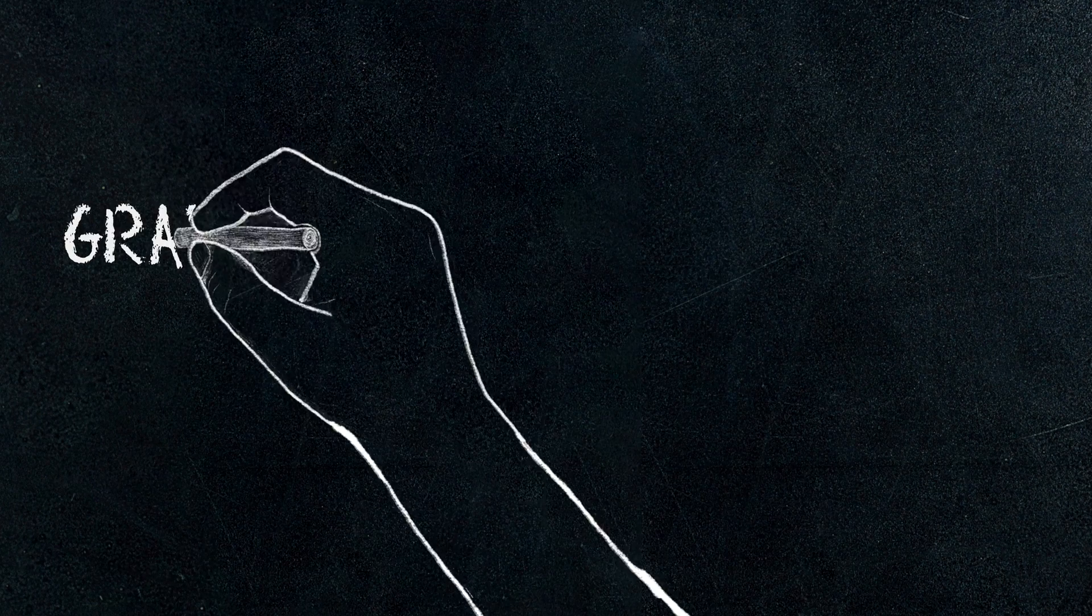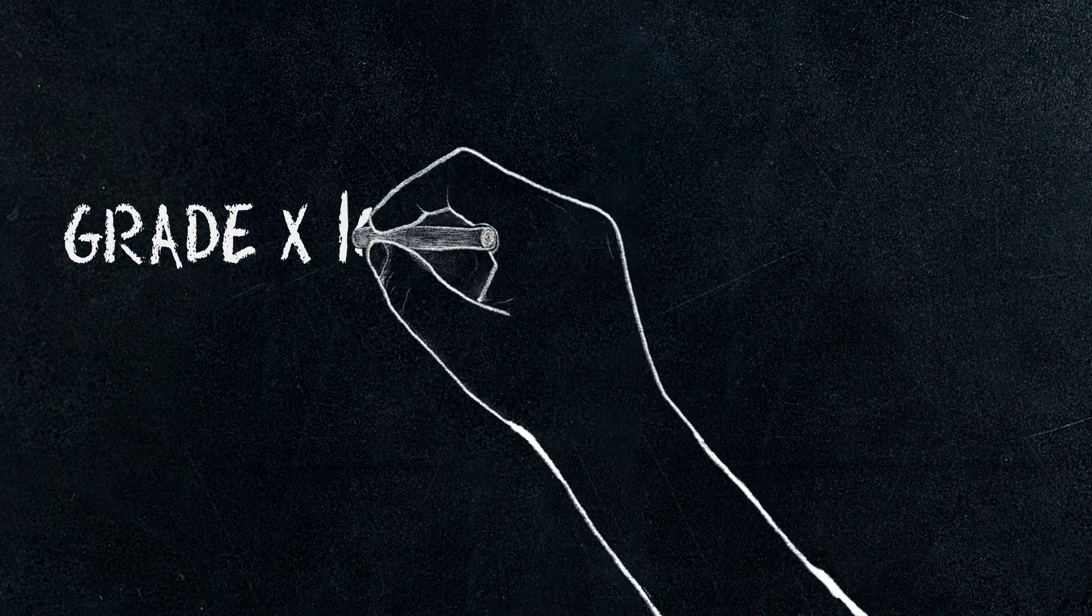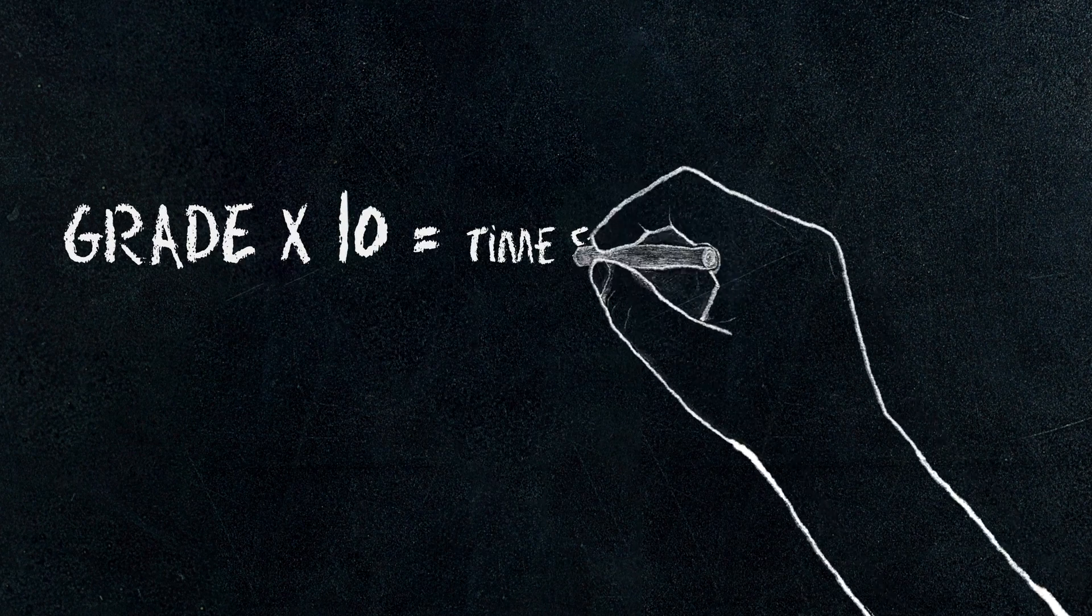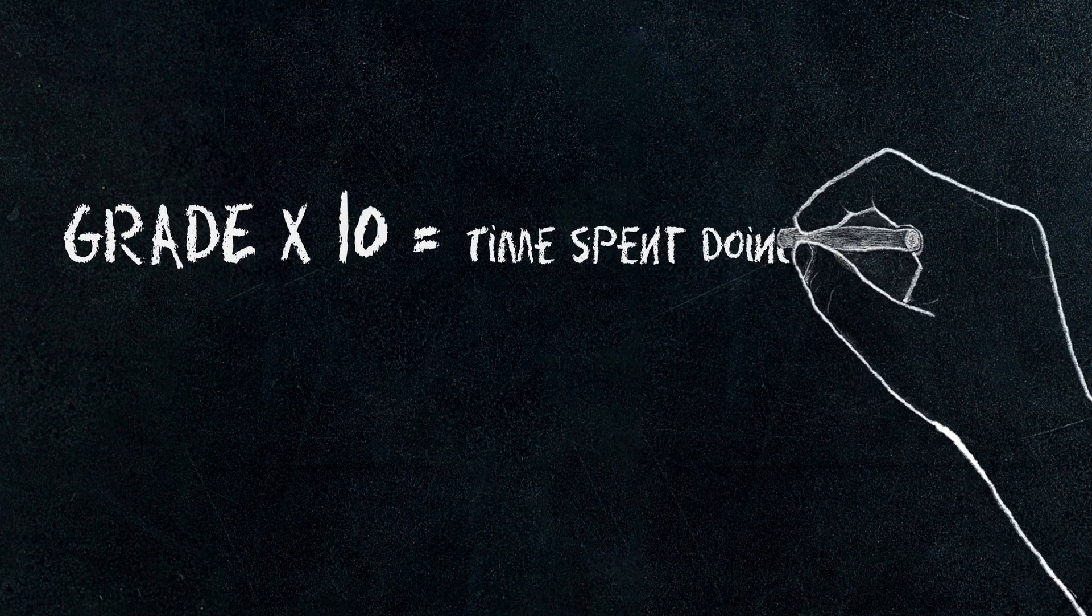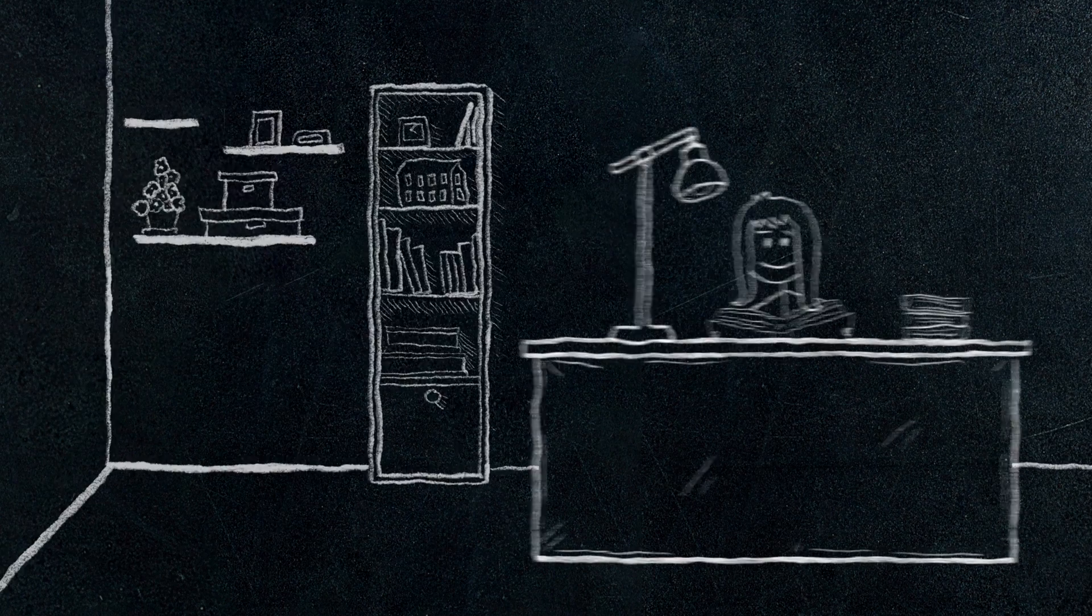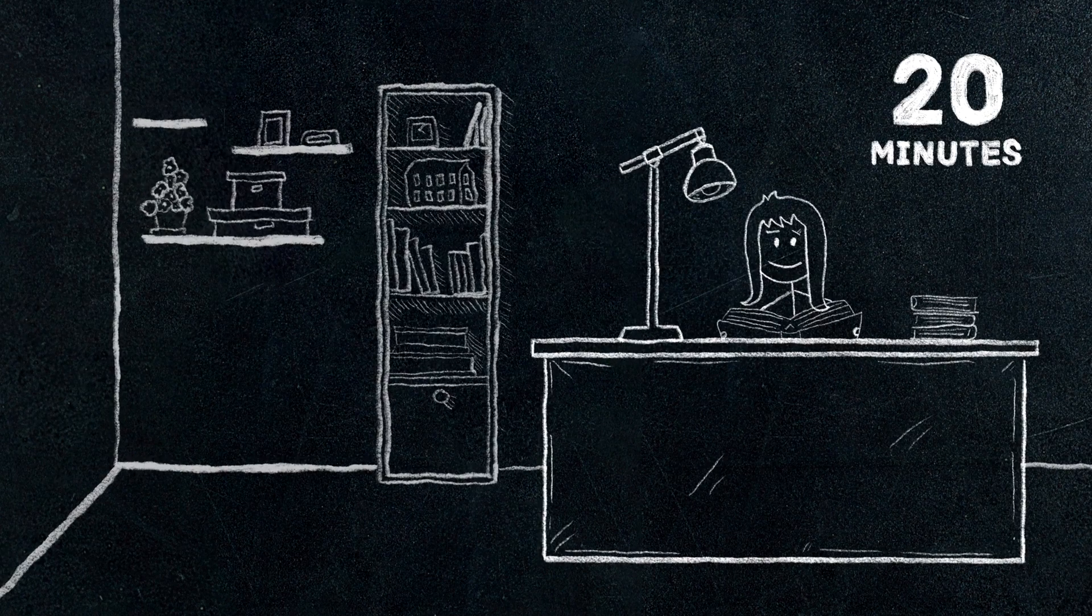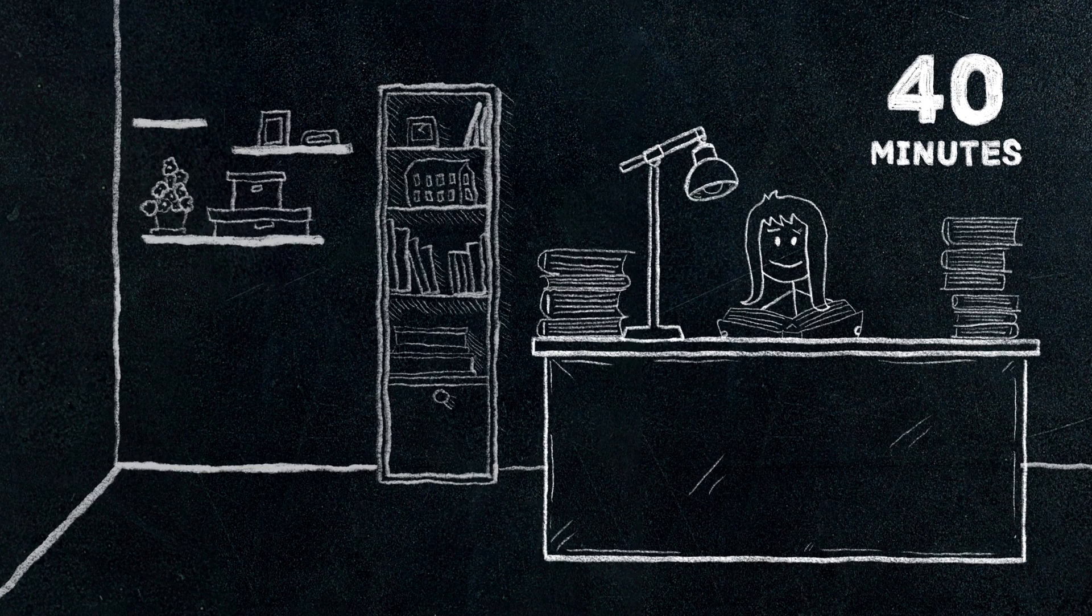Typically, what teachers will tell you is that homework should follow what's called the 10-minute rule. That means you take a child's grade and multiply it by 10, and that's about how much homework they should be getting each night. So a second grader would get 20 minutes of homework, a fourth grader would get 40 minutes of homework.